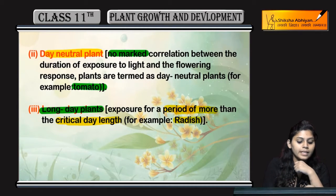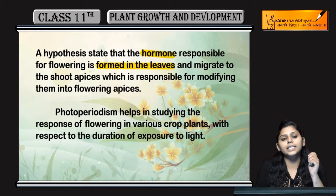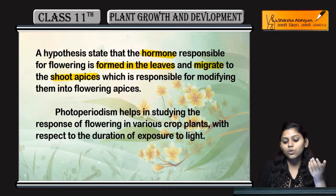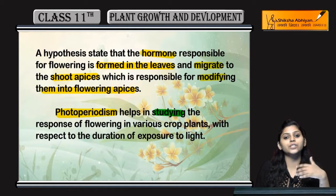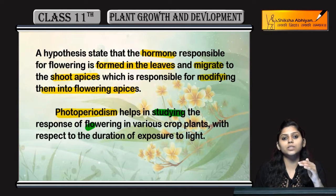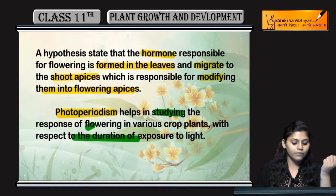For example, radish is a long day plant. There is a hypothesis that states that hormones responsible for flowering are formed in leaves, then transported or migrated to shoot apices, where they are responsible for modifying them into flower apices. Photoperiodism helps to study the response of flowering in various crop plants with respect to the duration of light exposure.